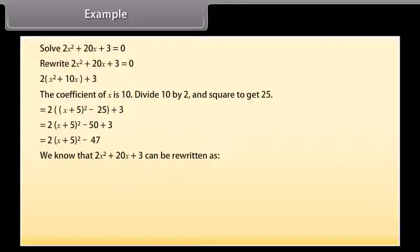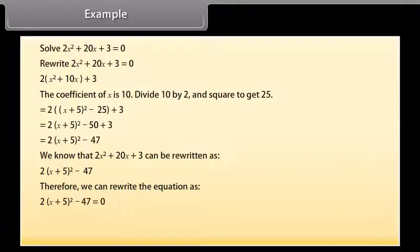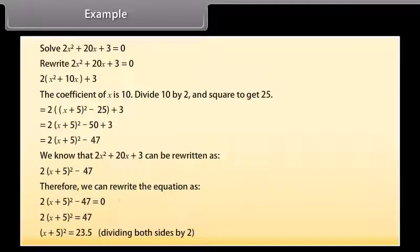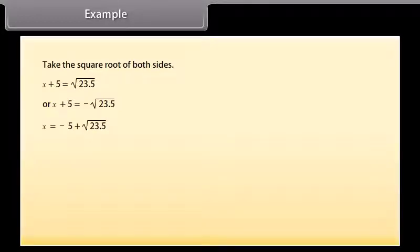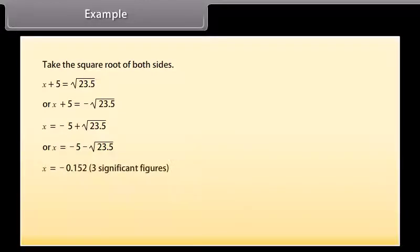We know that 2x² + 20x + 3 = 2(x + 5)² − 47. Therefore we rewrite the equation as 2(x + 5)² − 47 = 0, so 2(x + 5)² = 47. Dividing both sides by 2: (x + 5)² = 23.5. Taking the square root: x + 5 = ±√23.5, so x = −5 + √23.5 ≈ −0.152, or x = −5 − √23.5 ≈ −9.85 (both to three significant figures).